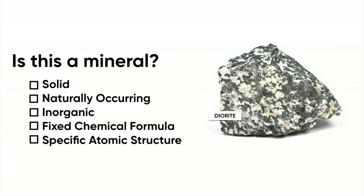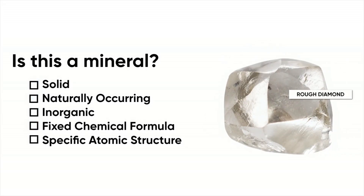What about this? This is the igneous rock diorite that we were talking about earlier. It's certainly a solid, it's found in nature, it's not man-made, and it is certainly not organic. But the problem is it doesn't have a fixed chemical formula. While most varieties of diorite have the same minerals, it does vary — some diorite has a lot of one substance and less of another. So it does not meet that criteria. In fact, diorite is an igneous rock composed of many intergrown minerals. What about a rough diamond? It's solid, found in nature, inorganic, not made by living things, has a fixed chemical formula — it's made of carbon — and has a very specific atomic structure. So diamond absolutely is a mineral.